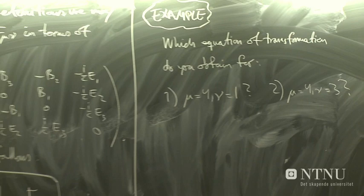So consider these two examples. If you consider mu equals 4 and nu equals 1, what kind of transformation equation do you obtain? And similarly for 4 and 3. So if you just take 5 minutes to try to derive these results, we'll discuss them. Okay, do you have any suggestions? Let's consider case 1 first.